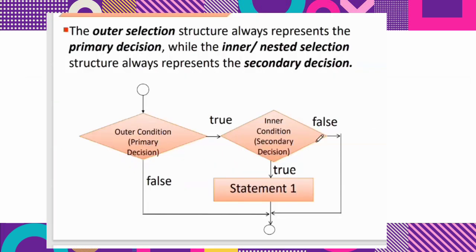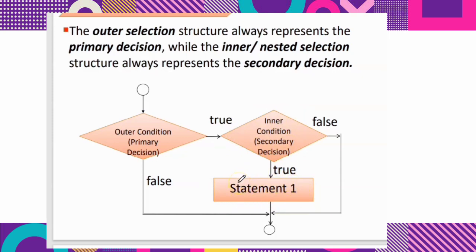The outer selection structure always represents the primary decision — this first condition is also known as the primary decision. The inner, or second, condition is also known as the secondary decision. The secondary decision structure always represents the secondary decision. When the check is true, the first statement will be executed.